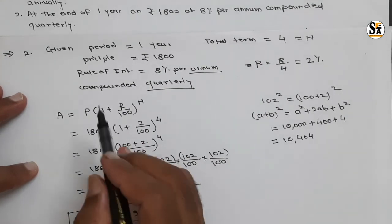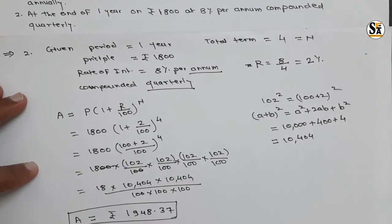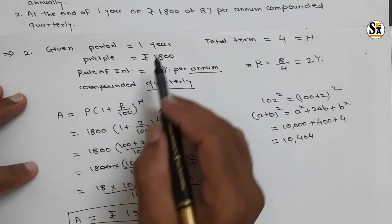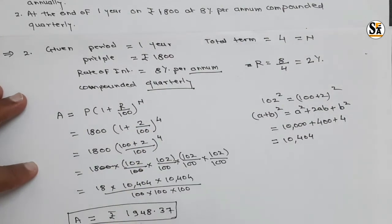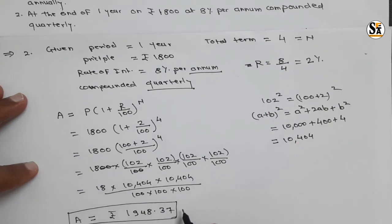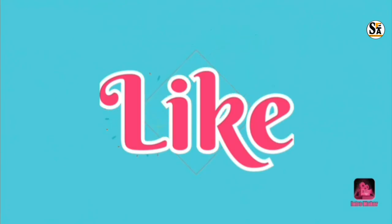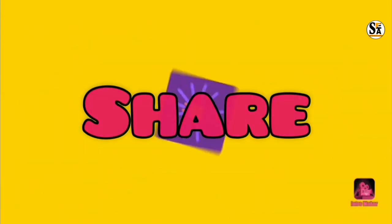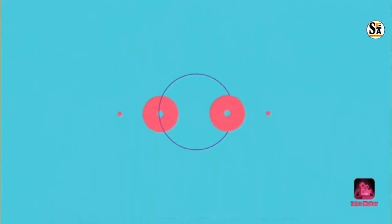The principal amount is rupees 1,800 and the total amount after calculating interest is rupees 1,948.37. So this is our final answer. This is all for this video. We will meet again in our next video. Do learn, do enjoy. Thank you.